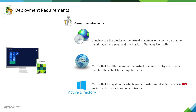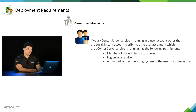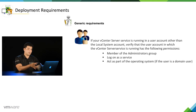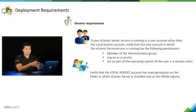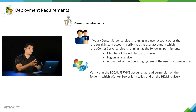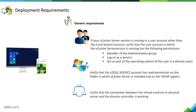You also need to know that you cannot install vCenter Server on an Active Directory domain controller. If you want to run your vCenter Server account other than the local system account, then you need to make sure that the user is a member of the Administrators group. The user must have Log On as a Service permission, and the local service account must have read permission on the folder where you want to run vCenter Server, as well as write permission on the registry. You also need to make sure the machine is communicating properly with the Active Directory domain controller.